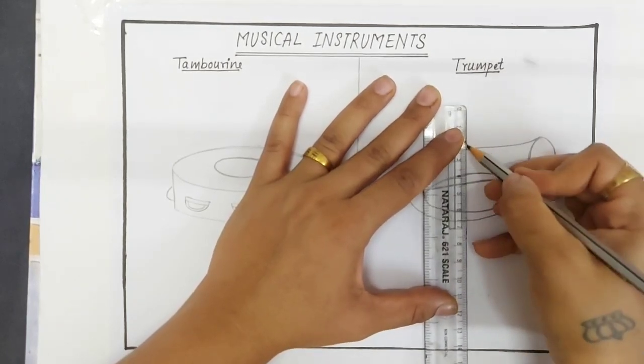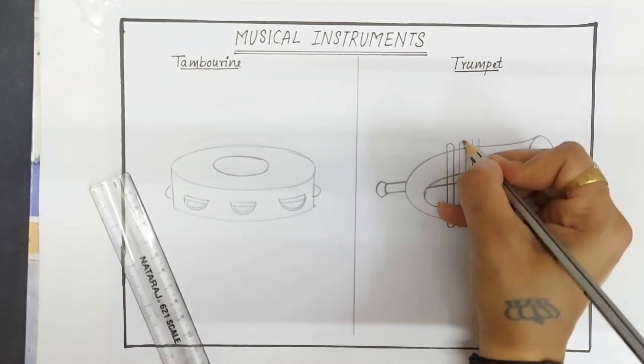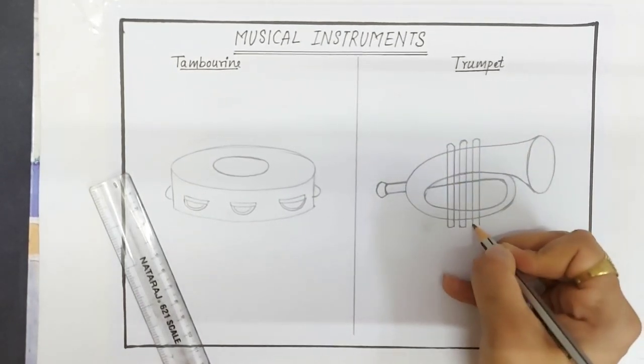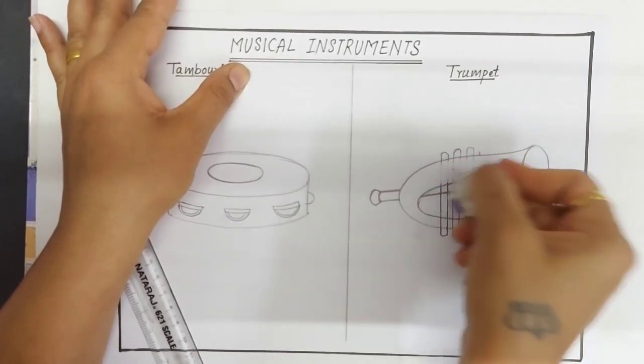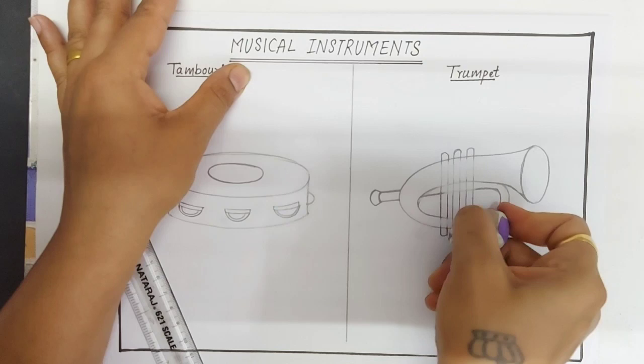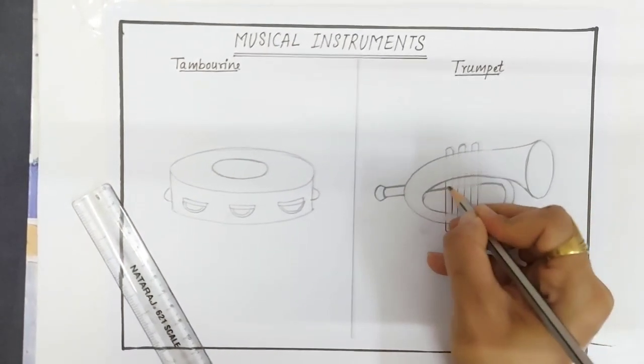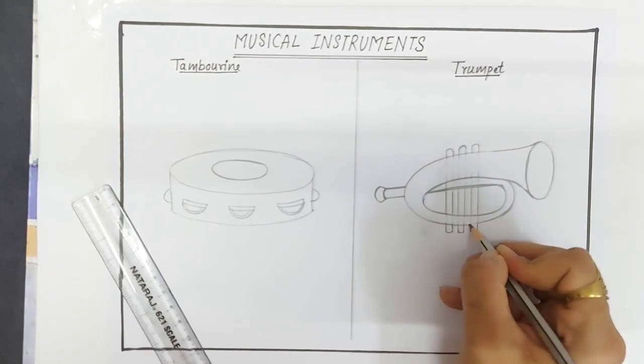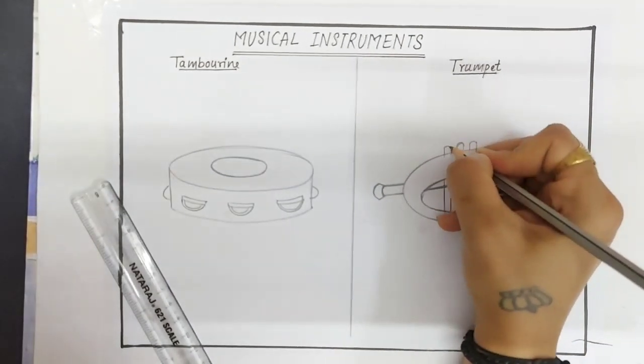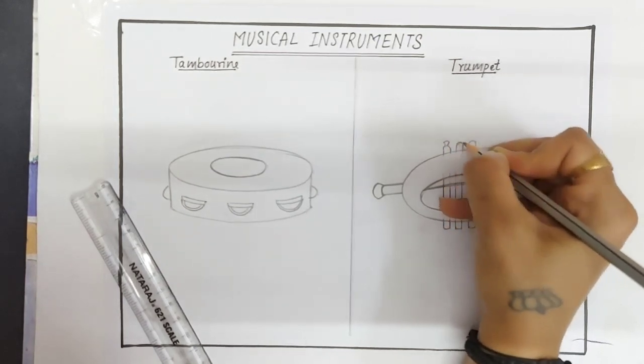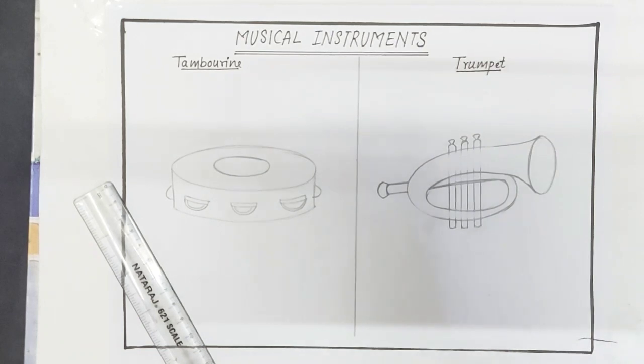Draw four more lines. Now erase all the overlapping lines. Draw pistons or keys at the top like this. Now use black marker for outline.